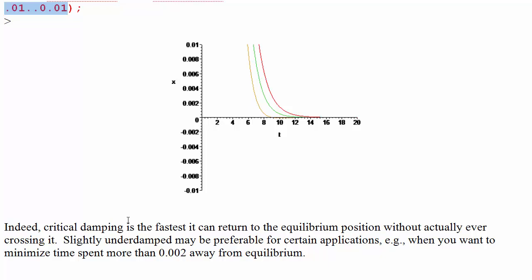If you care about getting back to the equilibrium to like within maybe 99 percent of the equilibrium position as fast as possible but you can pass it a little bit then maybe slightly underdamped would be better for certain applications.